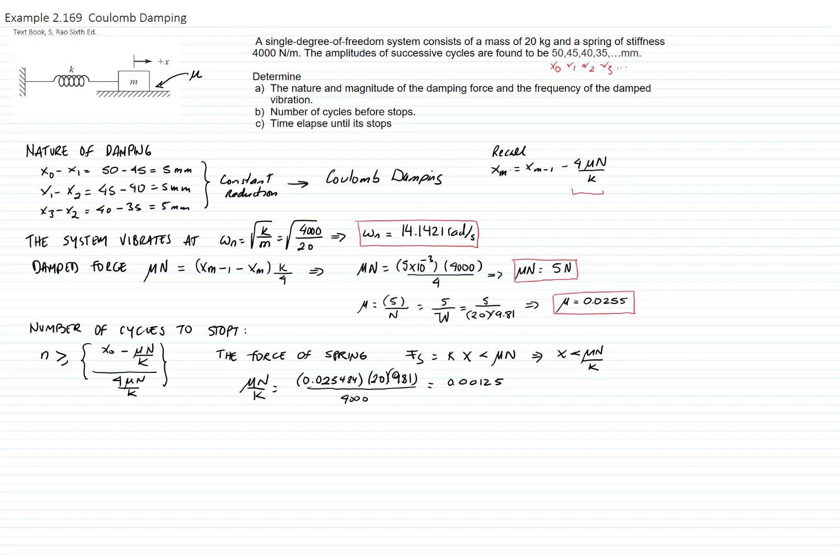I will plug this number to find the number of cycles, and that gives me 50 times 10 to the negative 3 minus 0.00125 divided by 4 times 0.0125. And that equals 9.75. That means that the system stopped before the tenth cycle.